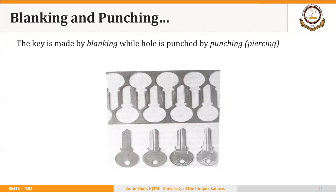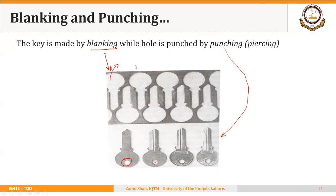To illustrate with an example — in order to make keys, first the perimeter of the key is made using blanking. Then, out of this piece that was removed, a circular portion is removed — that operation is piercing or punching. So the outer boundary of the key is made using blanking, and the hole in the key is made using punching or piercing operation.